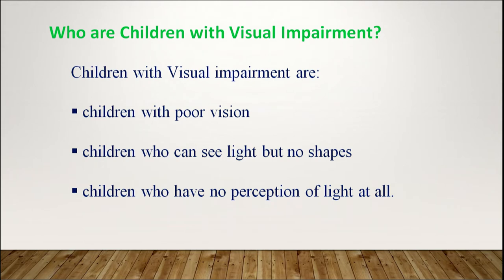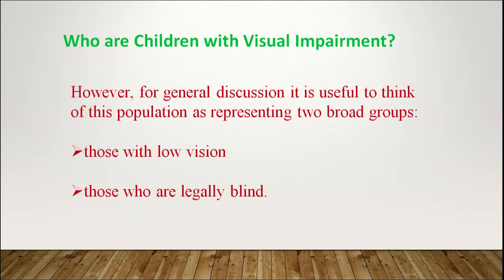Let us begin by understanding who are children with visual impairment. Children with visual impairment are children with poor vision, children who can see light but no shapes, and children who have no perception of light at all. For general discussion, it is useful to think of this population as representing two broad groups: those with low vision and those who are legally blind.